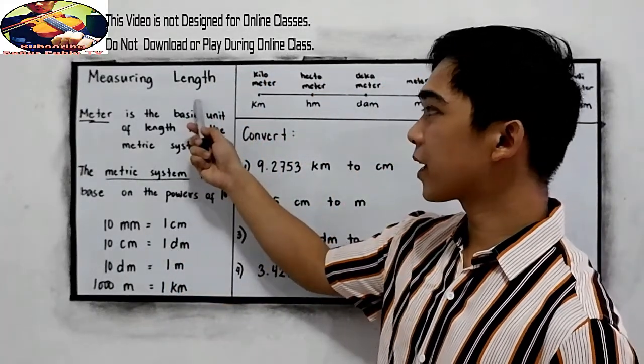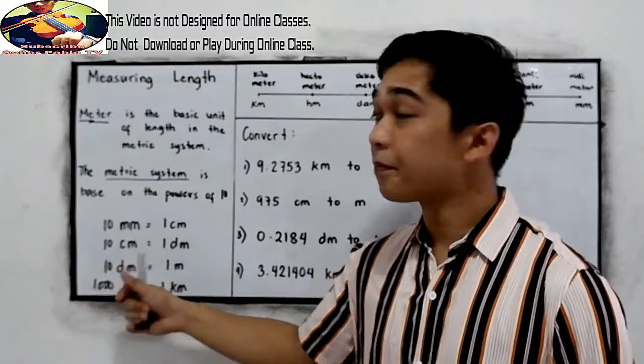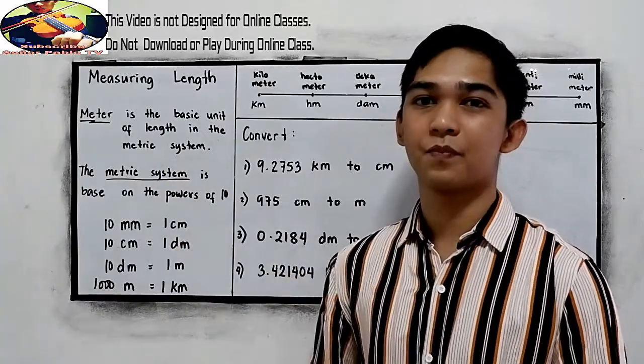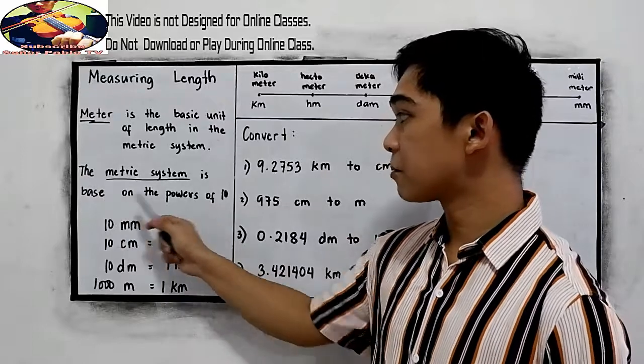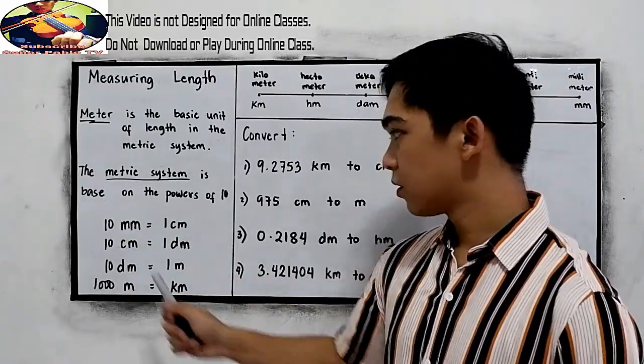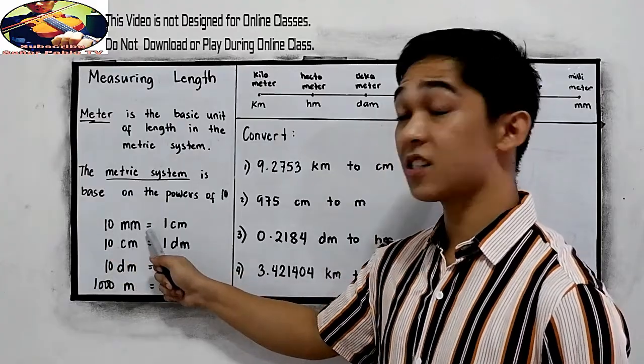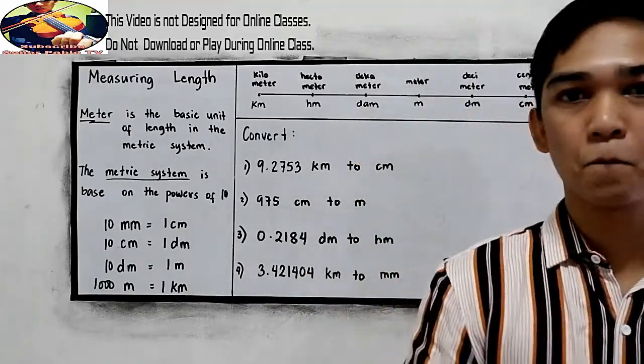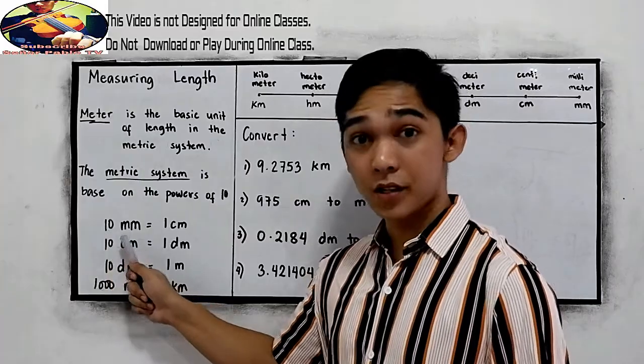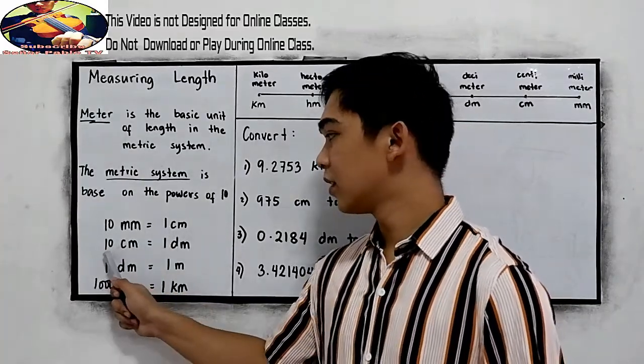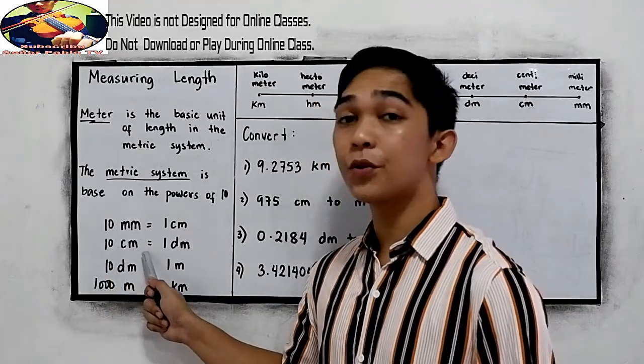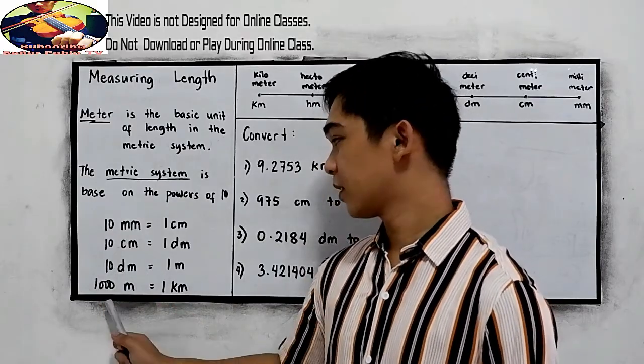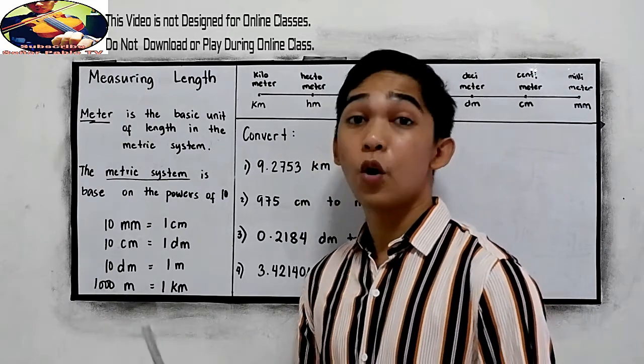So, measuring length. These are the things you need to remember. Meter is the basic unit of length in the metric system. The metric system is based on the powers of 10. We have 10 mm that is equal to 1 cm, 10 cm is equal to 1 dm, and 1000 m is equal to 1 km.